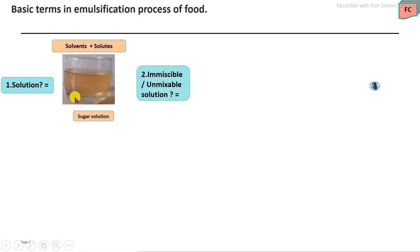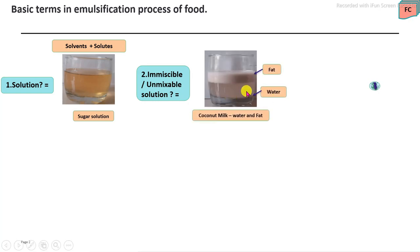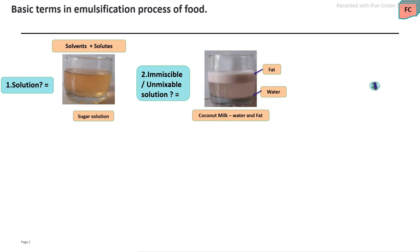What is meant by an immiscible or unmixed solution? In an immiscible solution, some constituents do not mix with each other. For example, oil and water, or milk cream and water — due to their density difference and property difference, they do not readily mix with each other. These are called immiscible constituents or immiscible solutions.